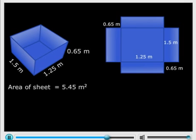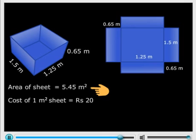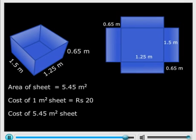There is another part to the question. If a sheet measuring 1 square meter costs 20 rupees, what is the cost of the sheet that we used for this box? Well, area is 5.45. So 20 rupees per square meter. So total cost is 20 into 5.45 or 109 rupees.